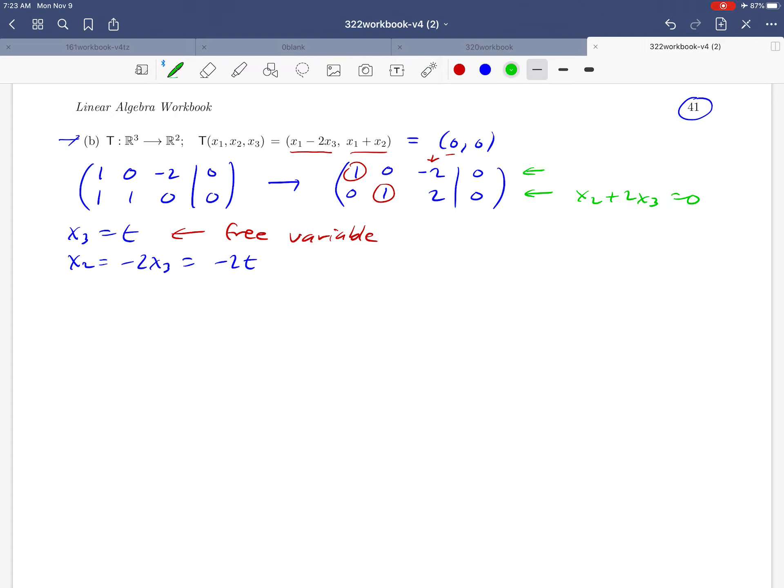And then finally back up to the first equation, that looks like x1 minus 2x3 equals zero. If we take that equation and solve it for x1, we're going to just add the 2x3 to both sides, and that's going to give us 2t. And therefore, the null space of T is going to look like the set of all things that have the form x1, 2t; x2, negative 2t; and x3, t, where t is in R.